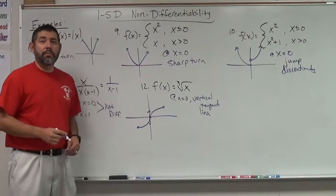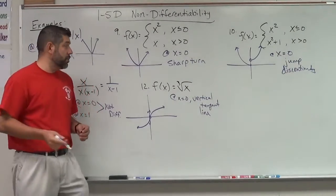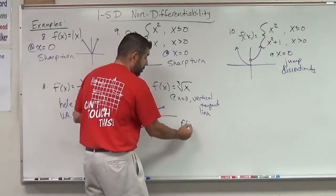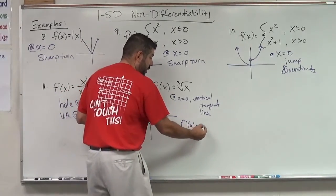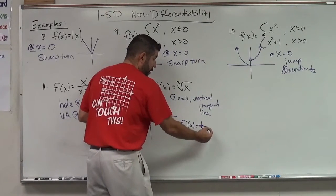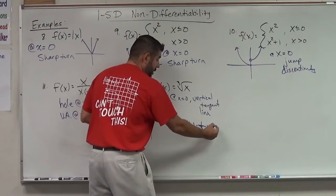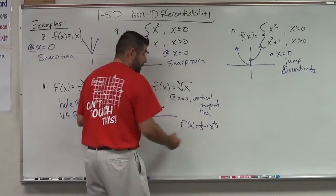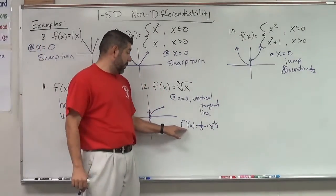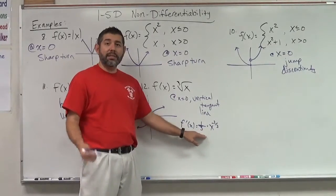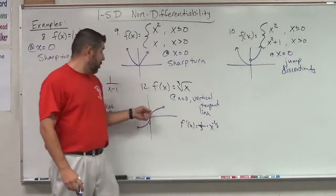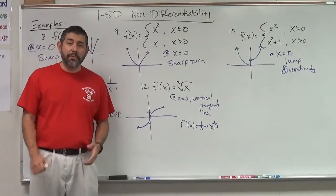And we already did differentiability rules. So if you actually use the power rule on this and you found the derivative, your derivative is going to end up being one-third times x to the negative two-thirds. And notice that brings an x in the denominator and where in this function of f prime can x not be equal to, x cannot be equal to 0 because of the denominator, which is telling us exactly where it's not differentiable.